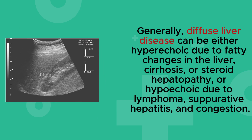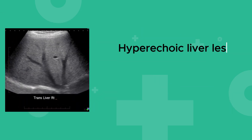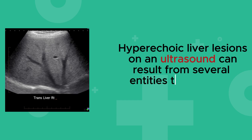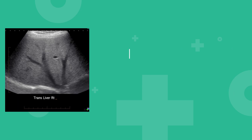Generally, diffuse liver disease can be either hyperechoic due to fatty changes in the liver, cirrhosis, or steroid hepatopathy, or hypoechoic due to lymphoma, suppurative hepatitis, and congestion. Hypoechoic liver lesions on an ultrasound can result from several entities that may be malignant or benign.